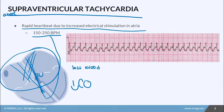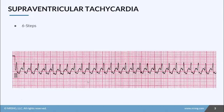Let's look at the characteristics of SVT and break it down using the six-step method. Step number one, let's look at the rhythm — do we have a regular rhythm or an irregular rhythm? So let's count some boxes. From here to here we have six boxes, from that one to that one we have six as well, and from there to there we have about six. So our rhythm is a regular rhythm.